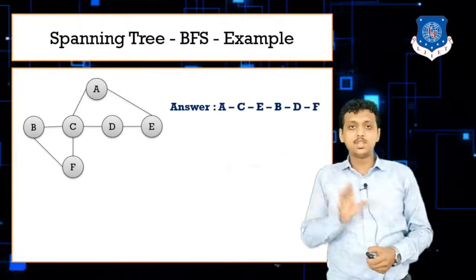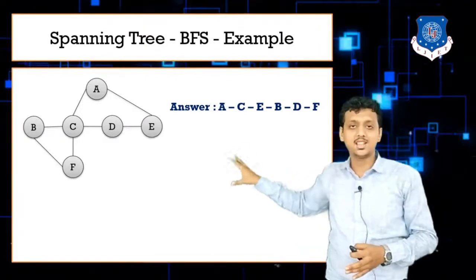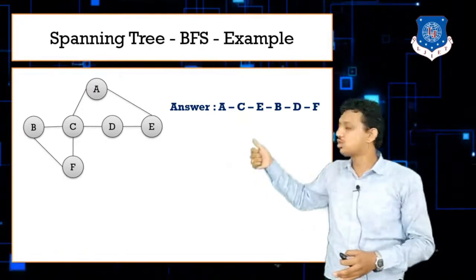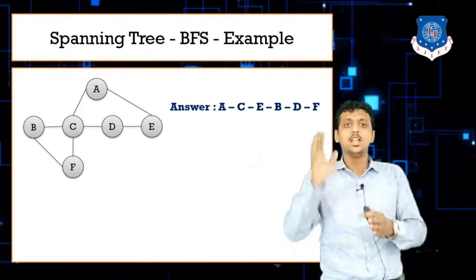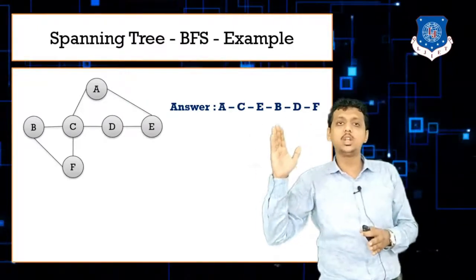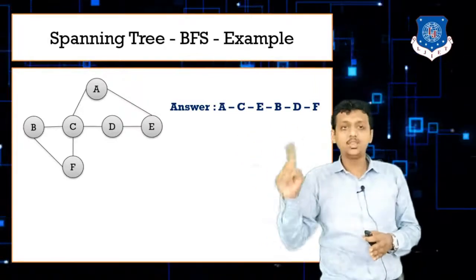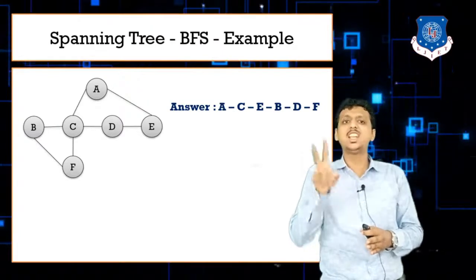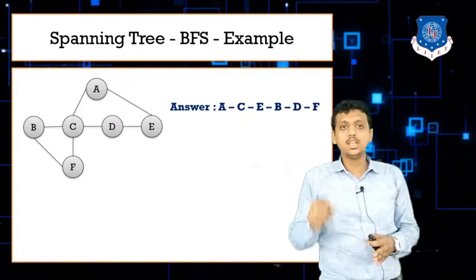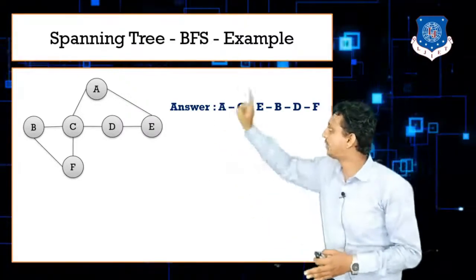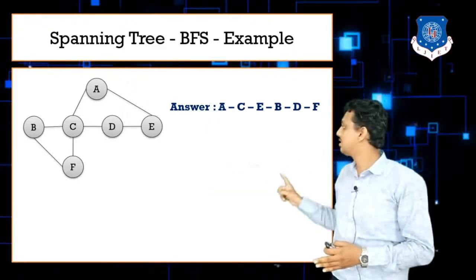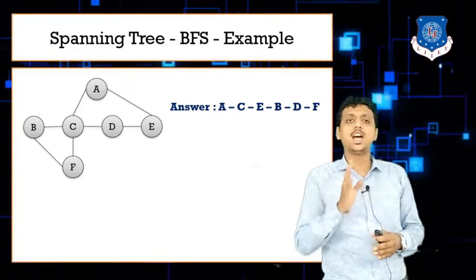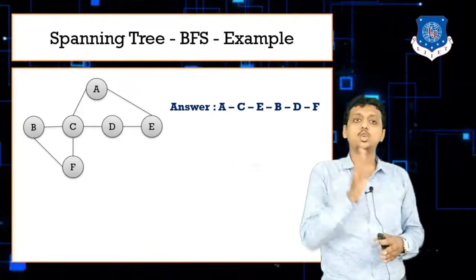If you've seen my previous videos on DFS and BFS, you'll recognize this as the final BFS answer. Let me solve BFS quickly. I start with node A — node A becomes my first visited node. This is breadth-first search, so I visit its adjacent nodes first. The adjacent nodes of A are C and E. After visiting A, I visit C and E, selecting C first arbitrarily, so the answer so far is A, C, E.